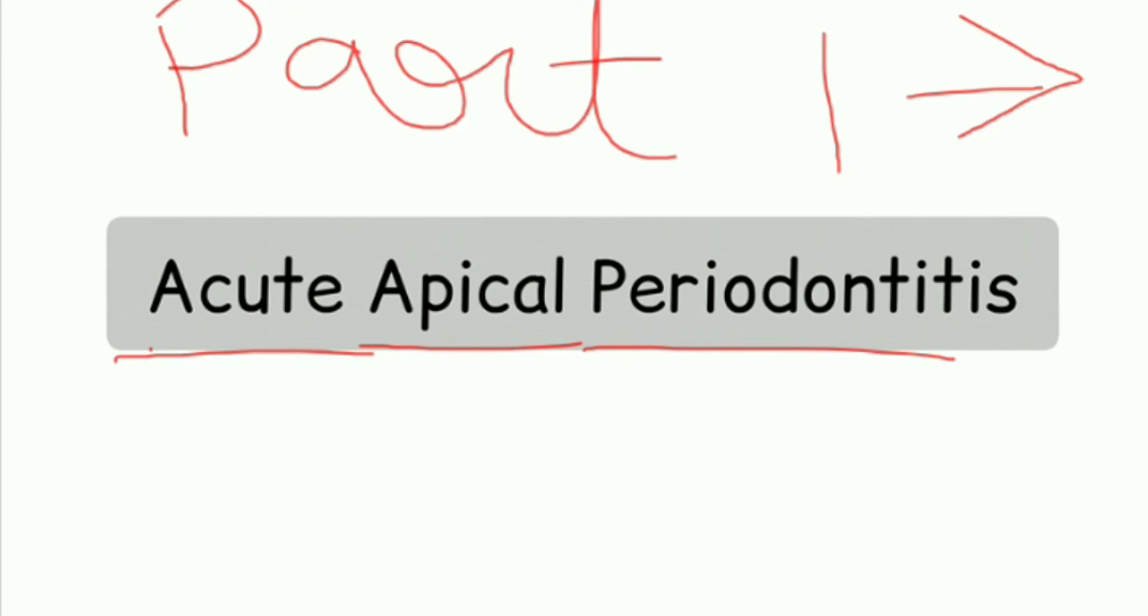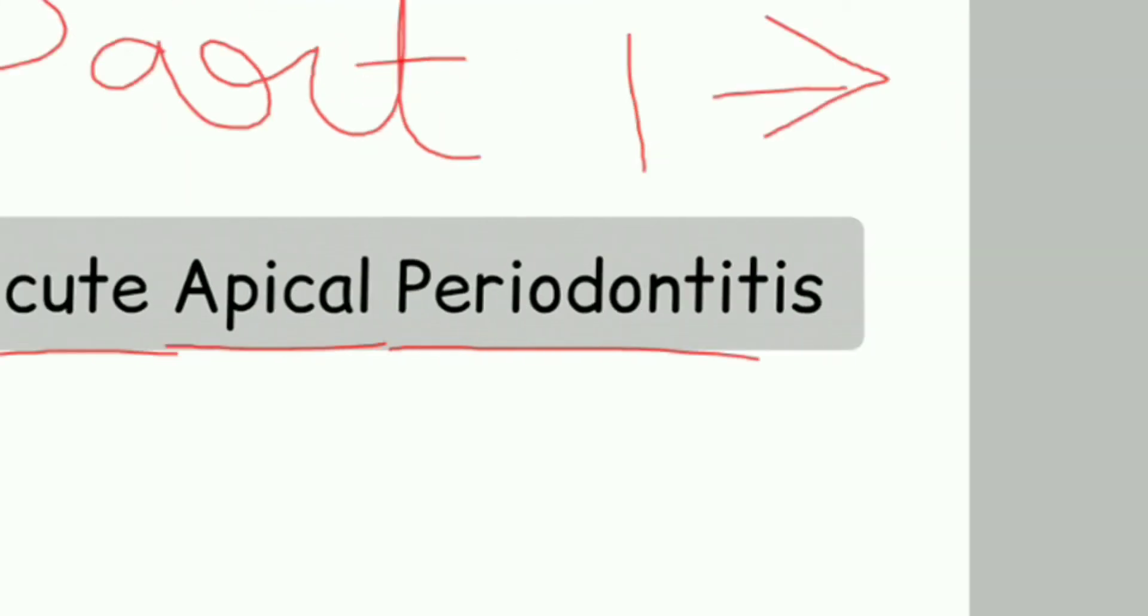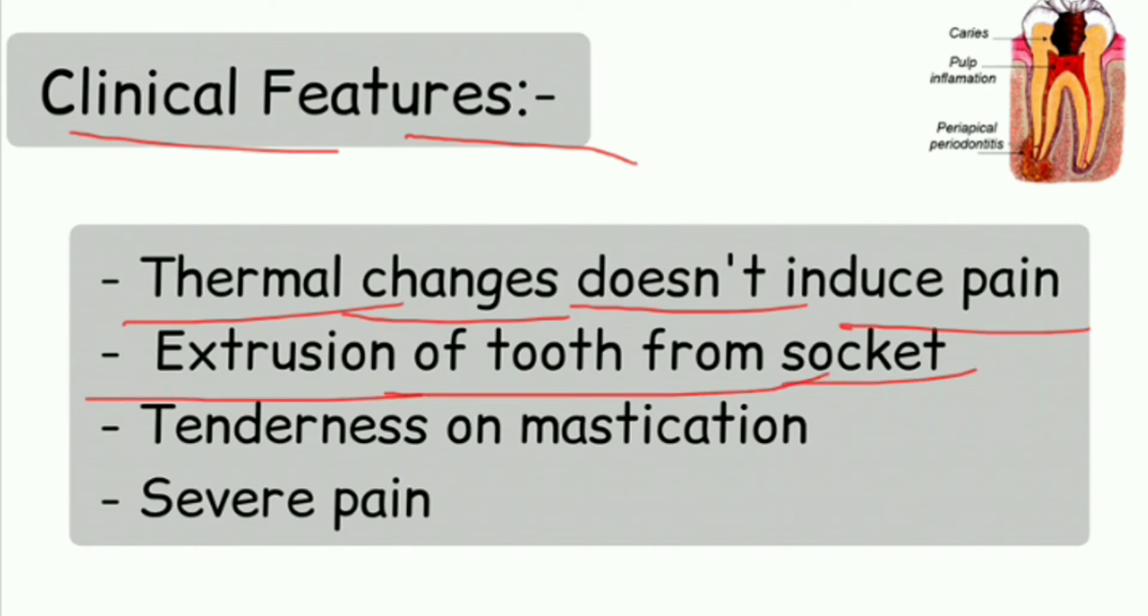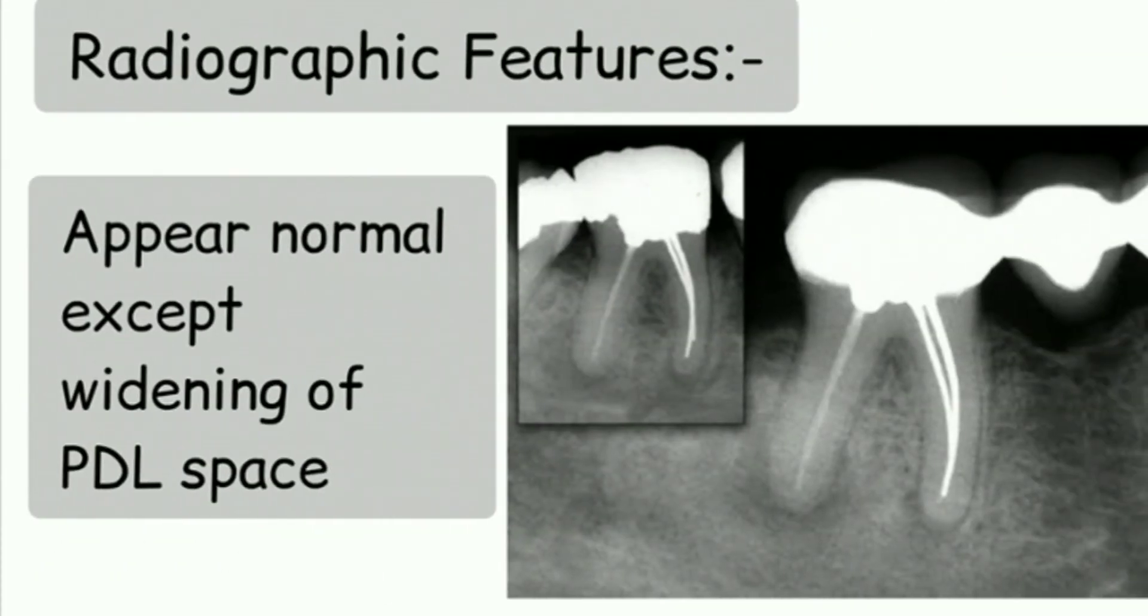Now I am going to talk about acute apical periodontitis. Let us see the clinical features first. Clinical features include: thermal changes don't induce pain because the pulp has already undergone necrosis, extrusion of the tooth from the socket where the tooth is extruded out and feels like it's not in the occlusal plane, tenderness on mastication, and severe pain.